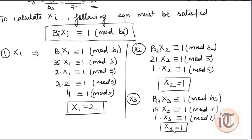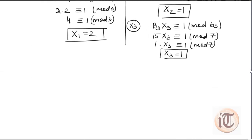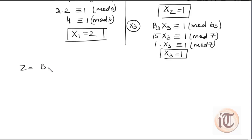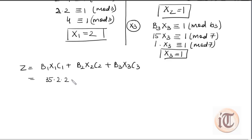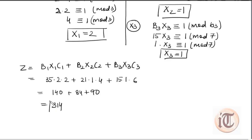Now we have all values: capital B1=35, x1=2, c1=2; B2=21, x2=1, c2=4; B3=15, x3=1, c3=6. Substituting into z = B1·x1·c1 + B2·x2·c2 + B3·x3·c3, we get z = (35×2×2) + (21×1×4) + (15×1×6) = 140 + 84 + 90 = 314. So z = 314.